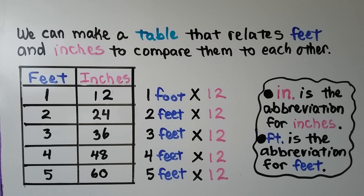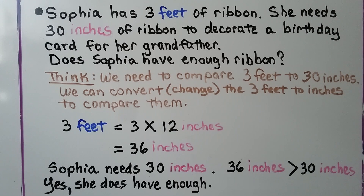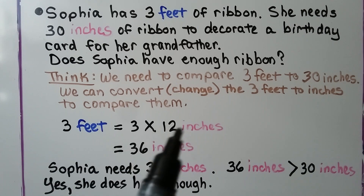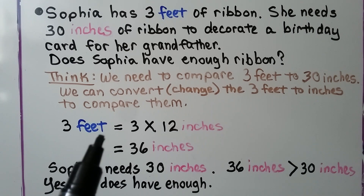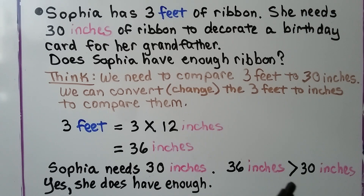Sophia has three feet of ribbon. She needs 30 inches of ribbon to decorate a birthday card for her grandfather. Does Sophia have enough ribbon? We need to compare three feet to 30 inches. We convert — that means change — the three feet to inches. We multiply three times 12, which equals 36 inches. She only needs 30 inches, and 36 inches is greater than 30 inches, so yes, she does have enough.